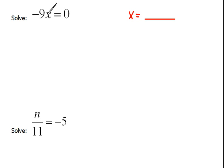Well, right now, x is being multiplied by a negative 9. So the opposite of that would be to divide by negative 9. What we do to one side, we have to do to the other side, which will cancel the negative 9s out. So on the left side, we have left x equals 0 divided by 9 is 0.